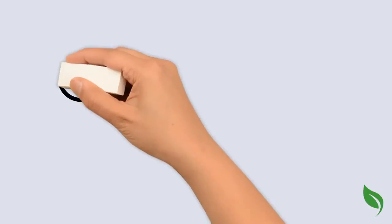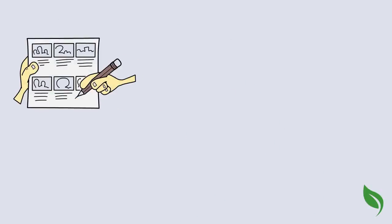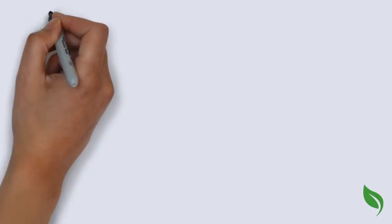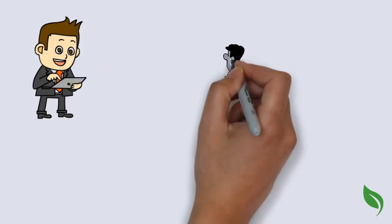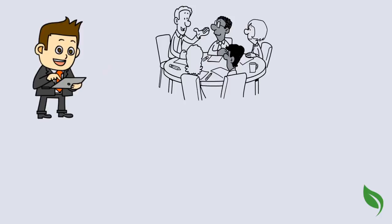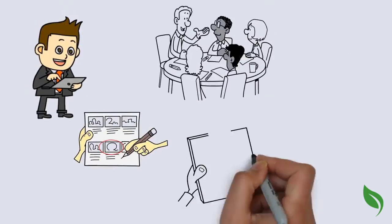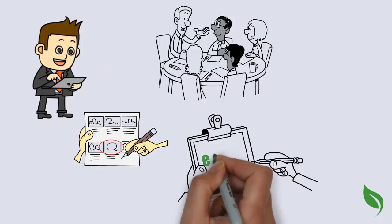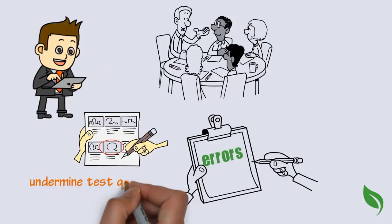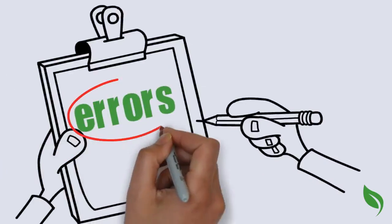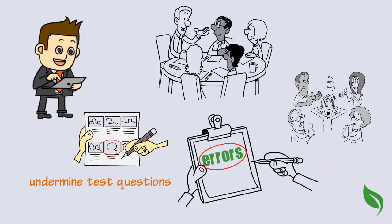Number nine. Proofread. When you are done creating your entire test, run through it, or better yet, have a trusted colleague take your test. It is easy to make small errors when we create a test and it is also easy for those errors to totally undermine test questions. So, try to catch them before you accidentally frustrate your test takers.